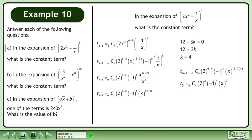Simplify. The fifth term is the constant term, and it has a value of 60.